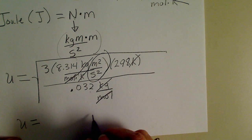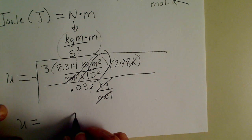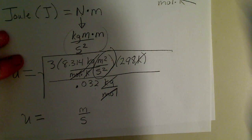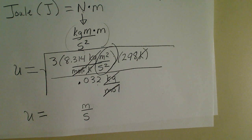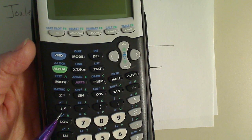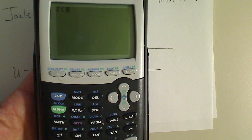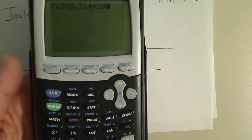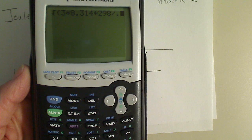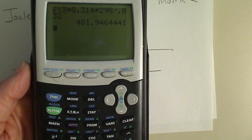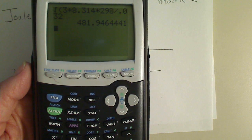We'll be taking the square root of a meter squared per second squared, and so our unit will end up just being in meters per second. On the calculator, I'm going to take the square root first. The square root symbol is right under the x squared symbol. So if I take the square root and hit 3 times 8.314 times 298, and divide that by 0.032, I get 481.9. So we'll call that 482 meters per second.